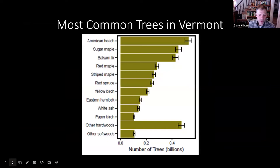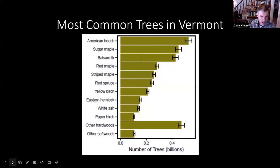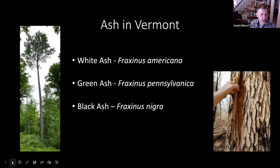Our next question: someone wants to know what are the 10 or so most common trees in Vermont — what am I likely going to be looking at? This figure is from the USFS 2017 publication Forests of Vermont. It shows the numbers of individual trees — the 10 most common. Leading the way: American beech, followed by sugar maple, red maple, striped maple, red spruce, yellow birch, hemlock, white ash, and taking up the rear, paper birch. We'll focus on many of these today.